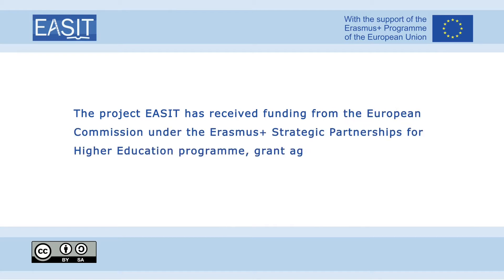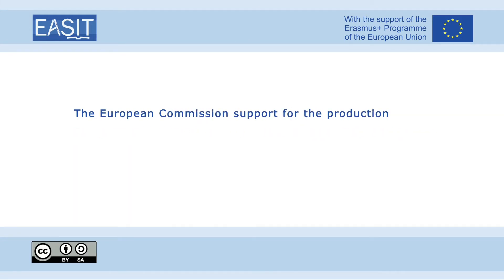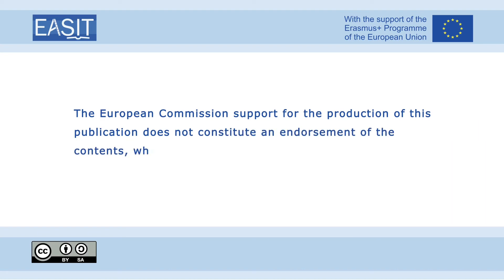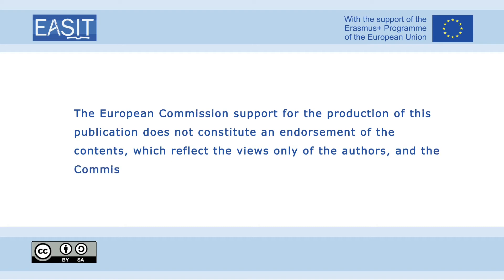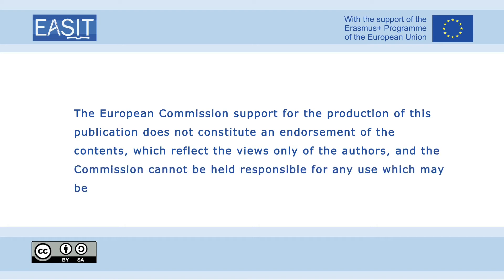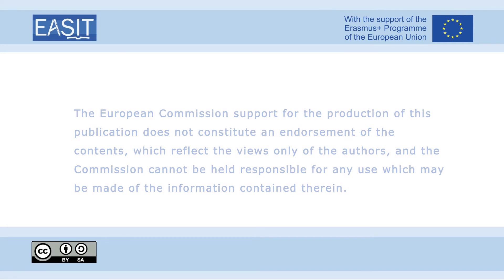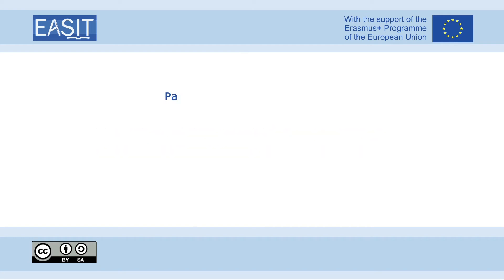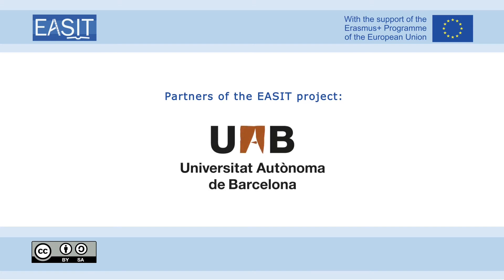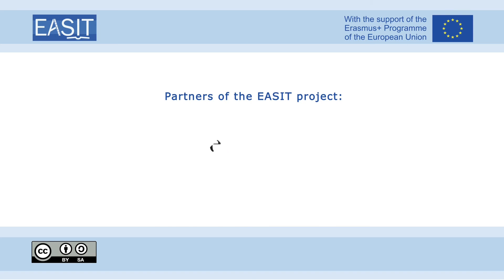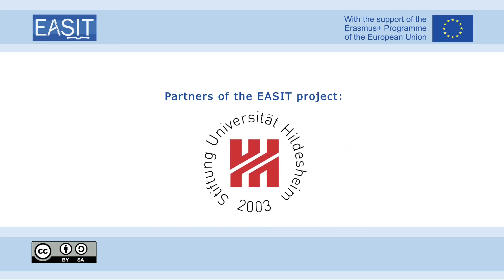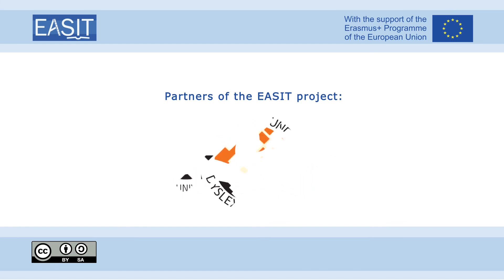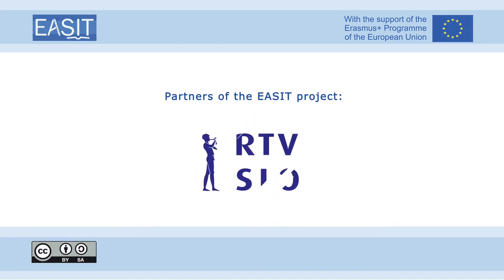The European Commission's support for the production of this publication does not constitute an endorsement of the contents, which reflect the views only of the authors, and the Commission cannot be held responsible for any use which may be made of the information contained therein. This work is licensed under a Creative Commons Attribution ShareAlike 4.0 International License. Partners of the EASIT project: Universitat Autònoma de Barcelona, Università degli Studi di Trieste, Universidad de Vigo, Stiftung Universität Hildesheim, SDI München, Dyslexia Association, Radio Televizija Slovenia, Zavod RISA.